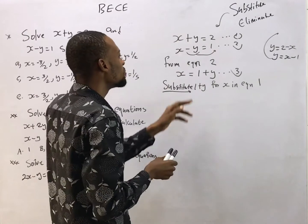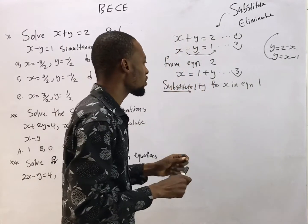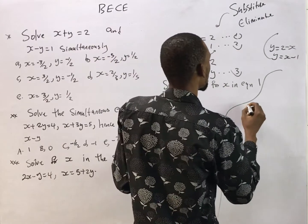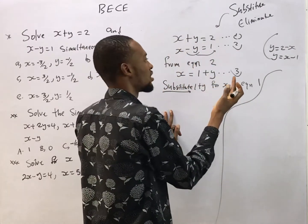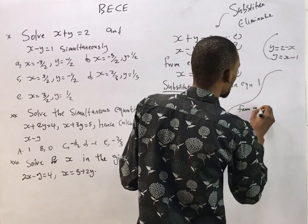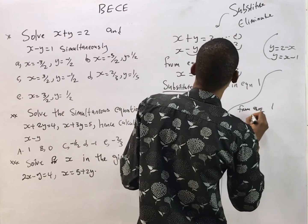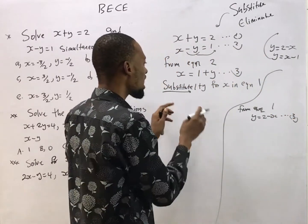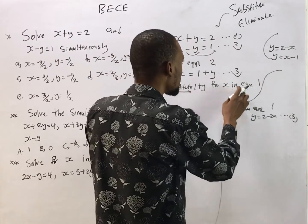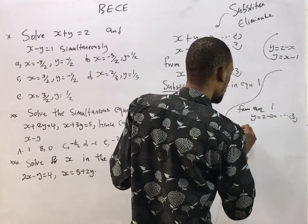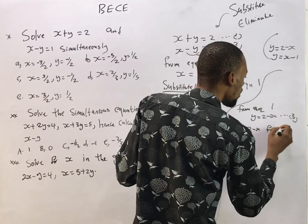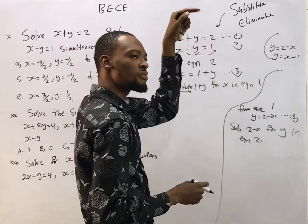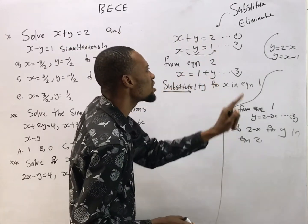Let me also show you the alternative approach. If you make y the subject formula from equation 1, you get y equals 2 minus s — call that equation 3 for your version. So if I substituted 1 plus y for s in equation 1, you would substitute 2 minus s for y in equation 2. Because I made s the subject in equation 2, I substitute into equation 1; you made y the subject in equation 1, so you substitute into equation 2.